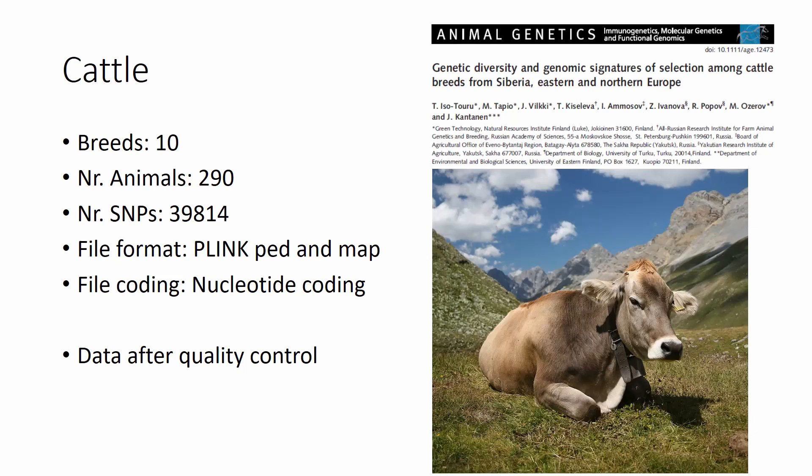The last cattle dataset for this video is published in Animal Genetics, from 10 breeds and almost 300 animals with almost 40,000 SNPs. The file format here is also PLINK PED and MAP with nucleotide coding.